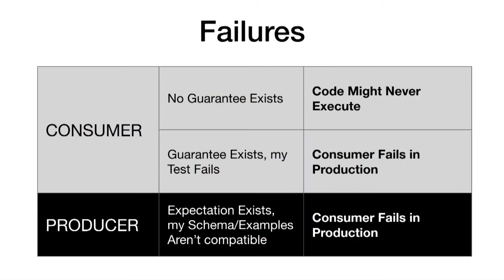There are two obvious failure modes and one interesting one. The interesting one: if I'm a consumer running a test expecting a message to be sent, and there is no guarantee in the central authority, that means I'll ship my code and it will never be executed — I'd probably want to know that before writing it. If the guarantee exists but my tests fail, I'm broken in production. If the producer checks expectations and they aren't compatible with what the producer's going to produce, then at least one consumer is going to be broken. We could know these things in advance in our CI system.